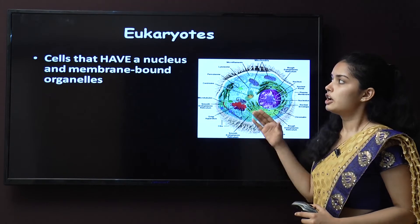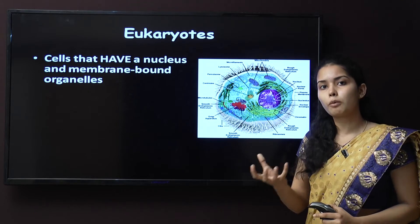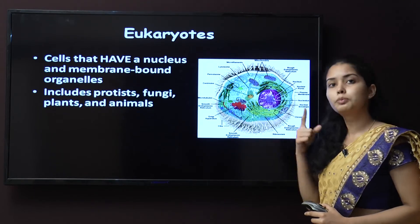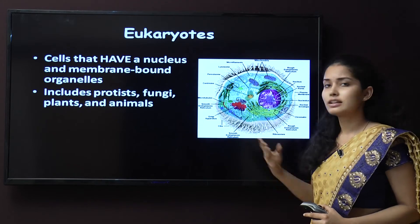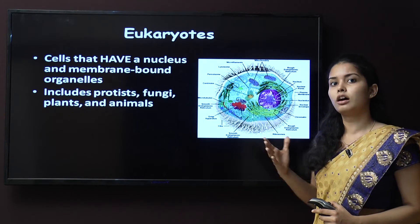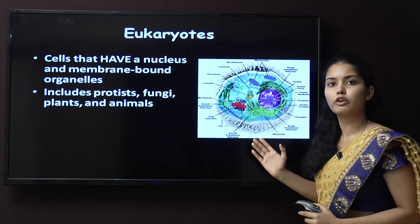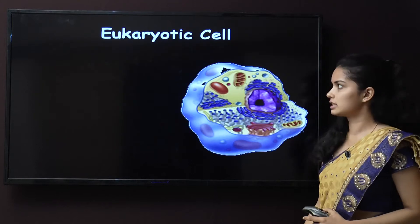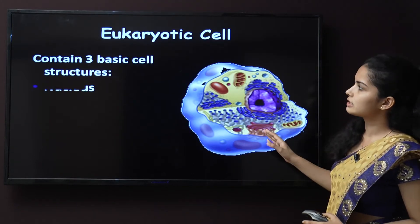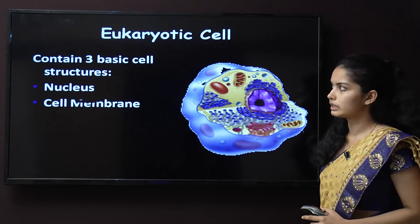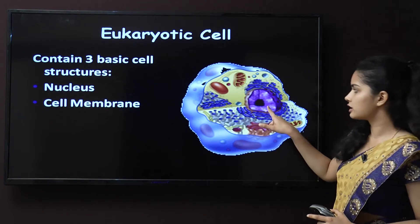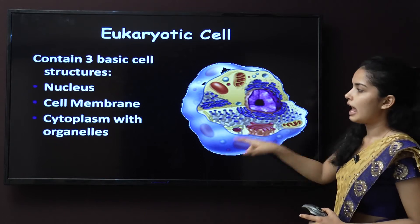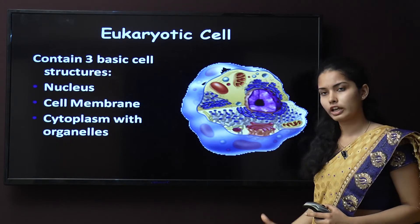Eukaryotes are cells that have a proper, well-developed nucleus and membrane-bound organelles. They include protists, fungi, plants, and animals — all these higher-level organisms are made up of eukaryotic cells with more complex cell types. The eukaryotic cell has mainly three basic structures: the nucleus at the center, the cell membrane covering the whole cell, and the cytoplasm with organelles in it.